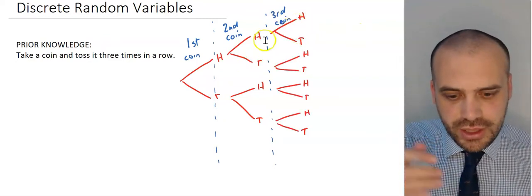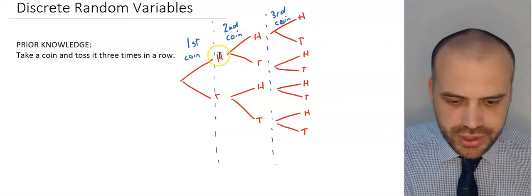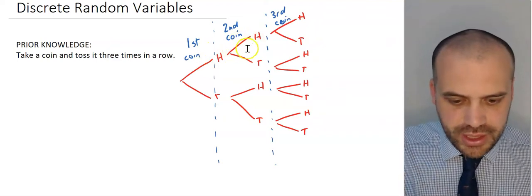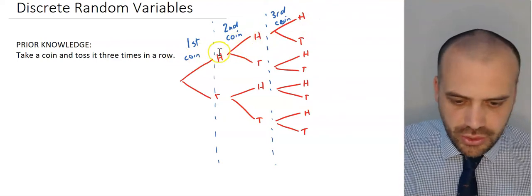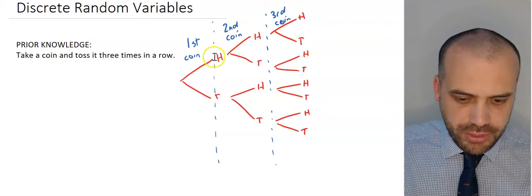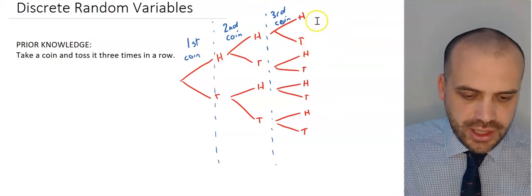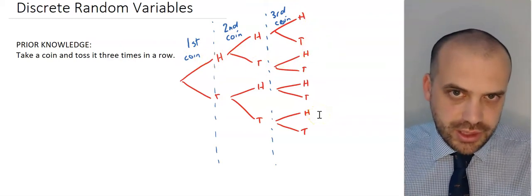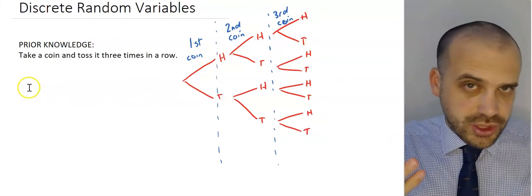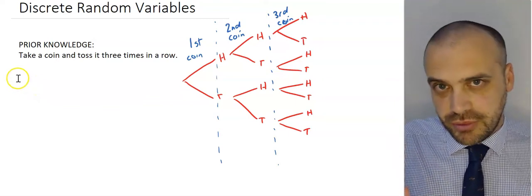We're left with eight different options. For example, we could have heads, heads, and heads. Or this one here might be heads, then tails, then heads. There are eight different things happening here. You're familiar with this kind of thing because you've done probability before.